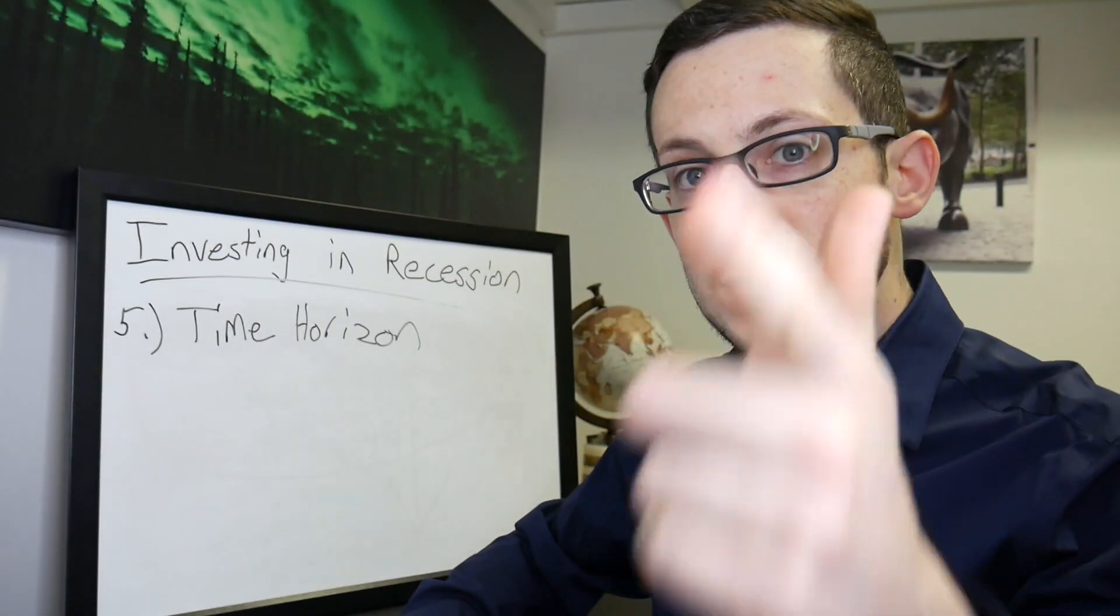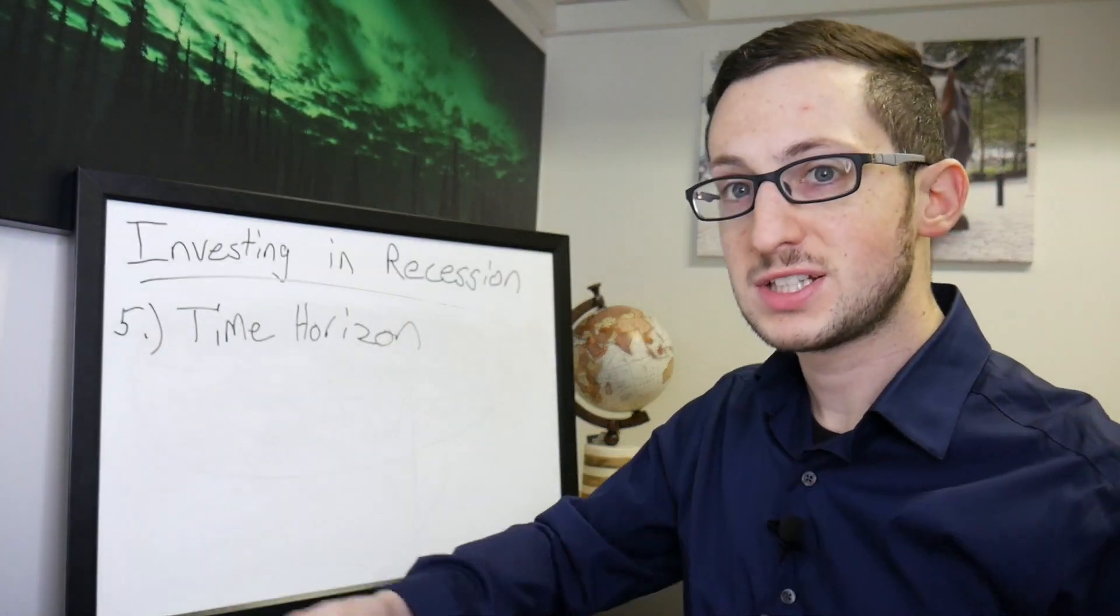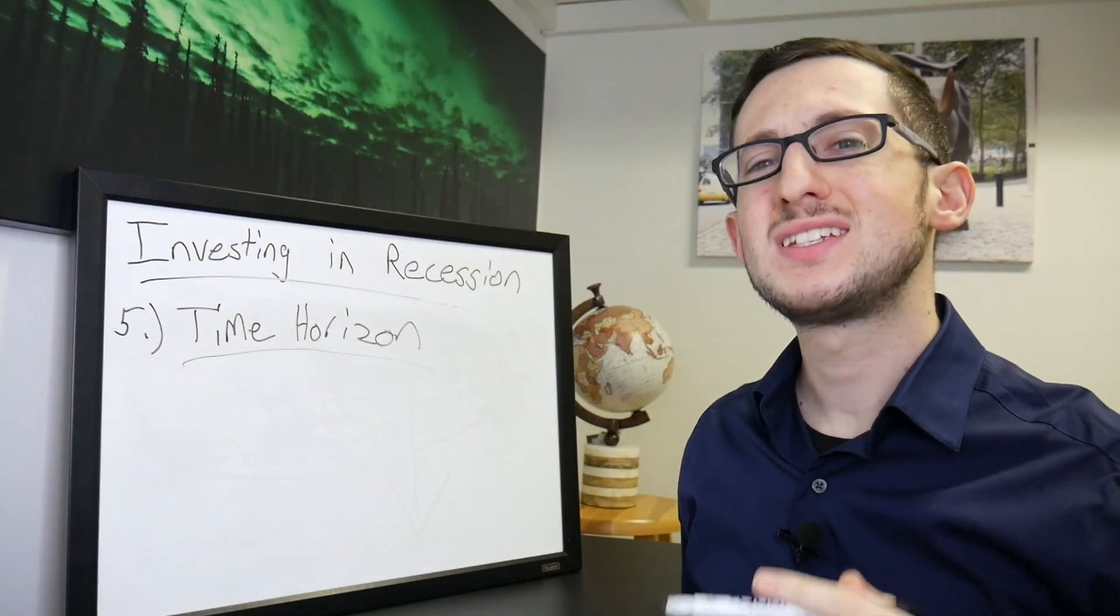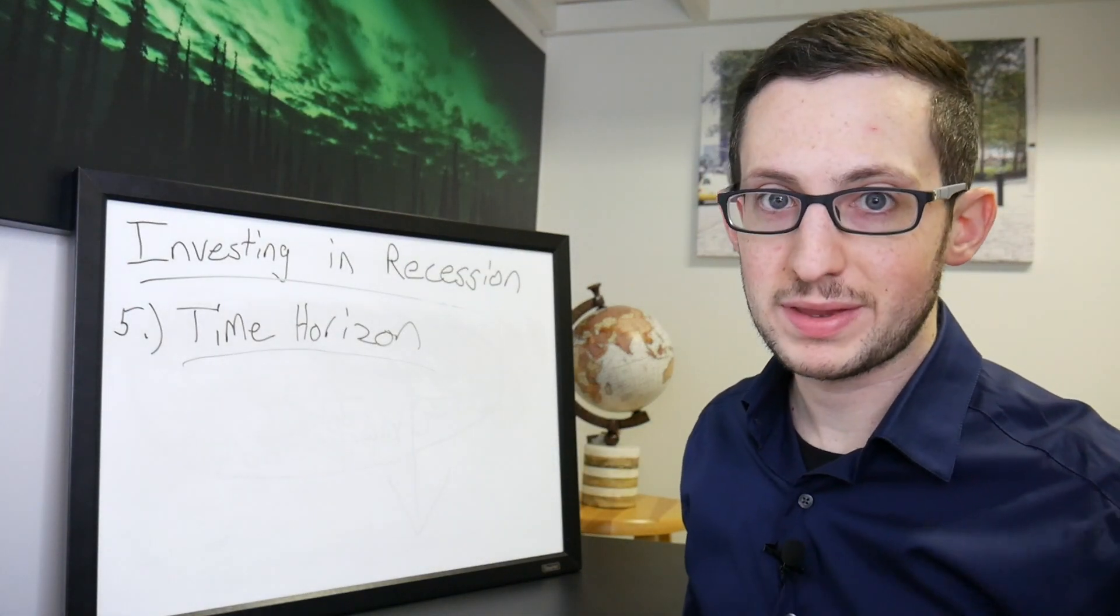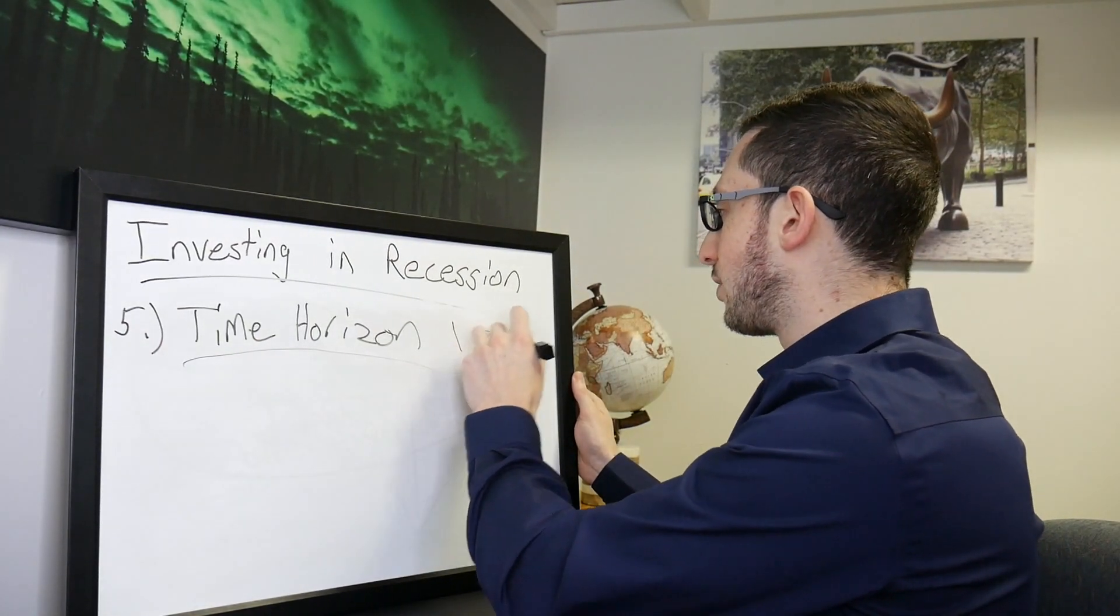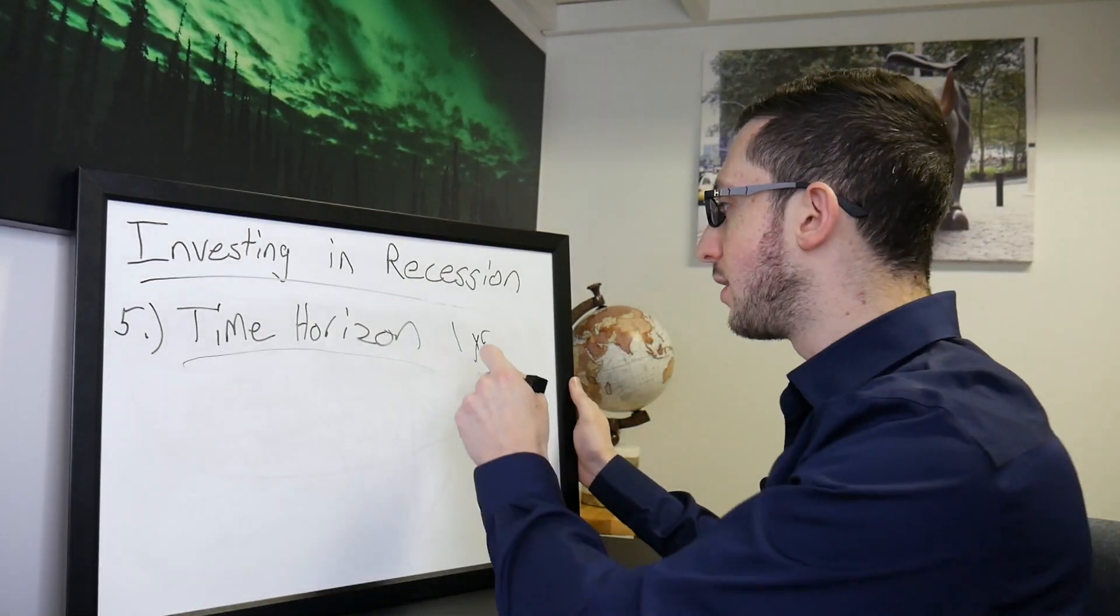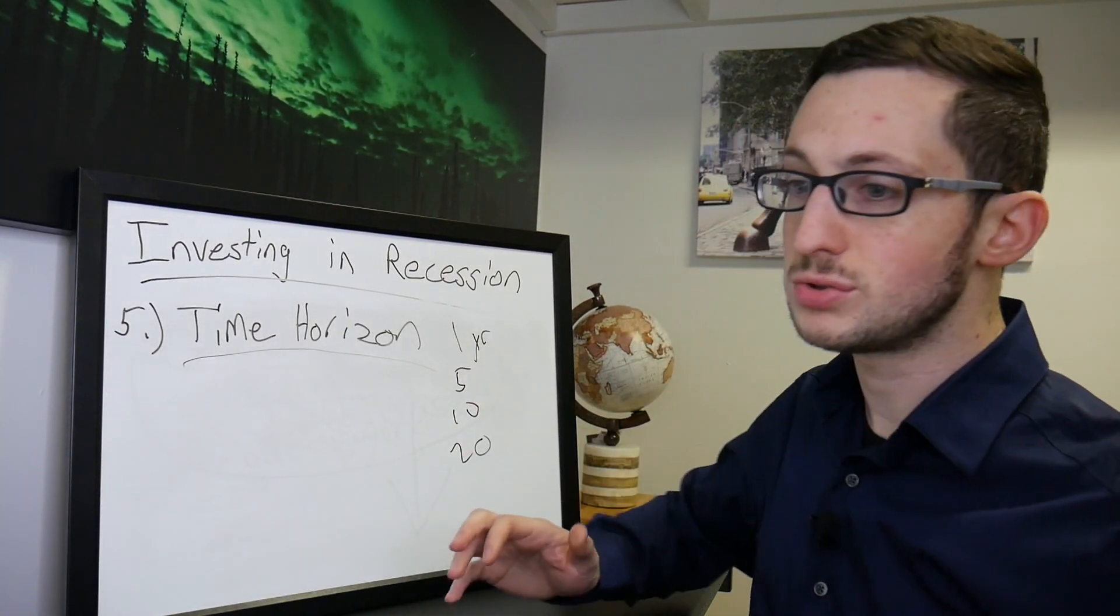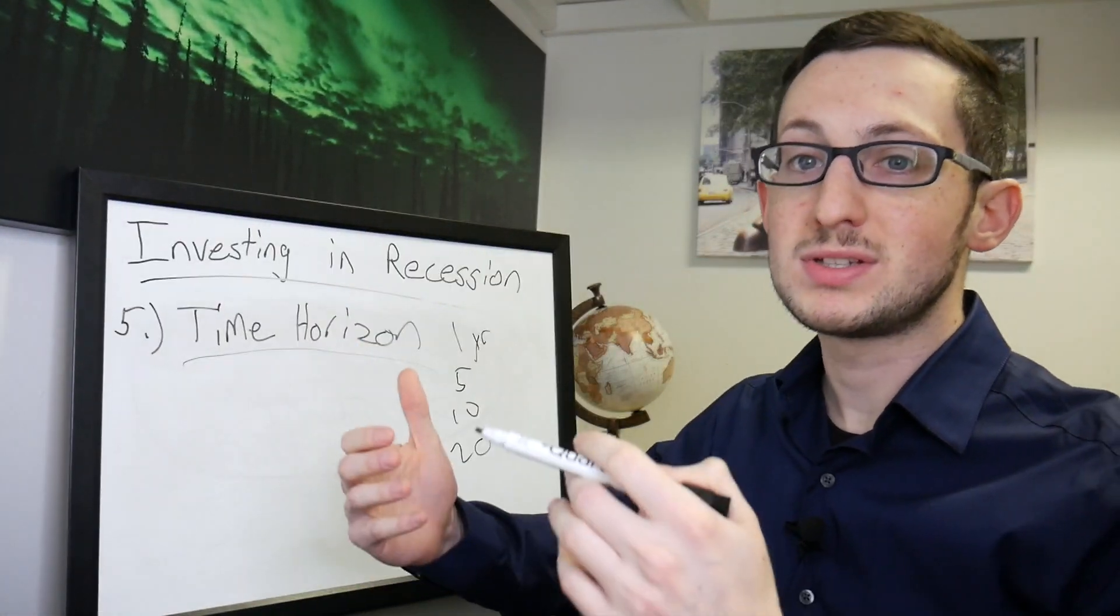Number five thing you got to check out while investing in recession is look at your time horizon. This is a super important thing to look at. If you're looking at maybe if you're going to keep your money in there for one year, if you have five years, 10 years, or 20 years until you want to take it out or maybe until retirement.